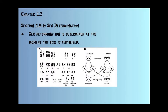Looking at this chart, sex determination is determined at the moment the egg is fertilized. We have a female parent and a male parent. The female can only make X chromosomes in the eggs, and the male can either make an X or a Y. If the X chromosome sperm links up with the X egg, we make a female. If the Y chromosome meets up with the X egg, we would have a male. So there you can get the idea of how this works on a very simple basis.